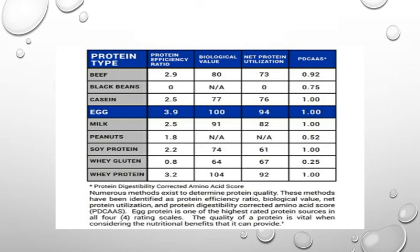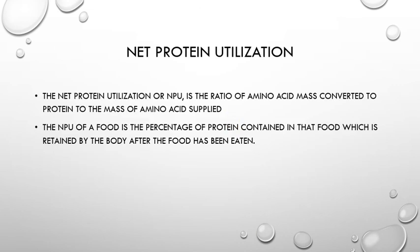For casein: protein efficiency ratio is 2.5, biological value 77, net protein utilization 76, PDCAAS 1.00.